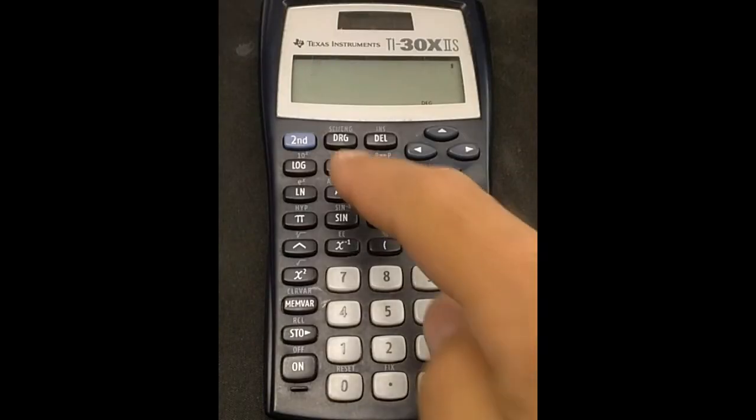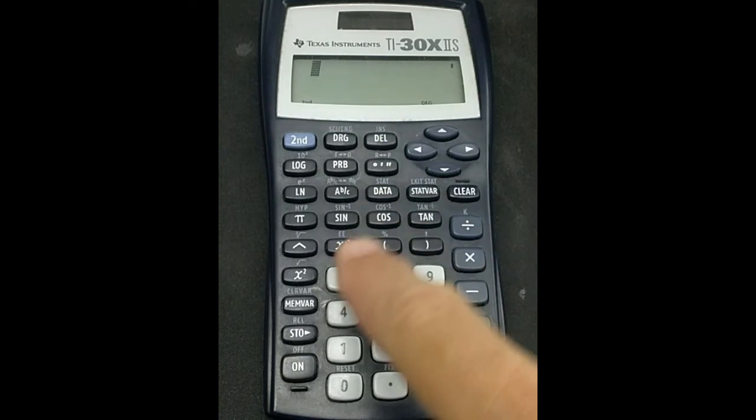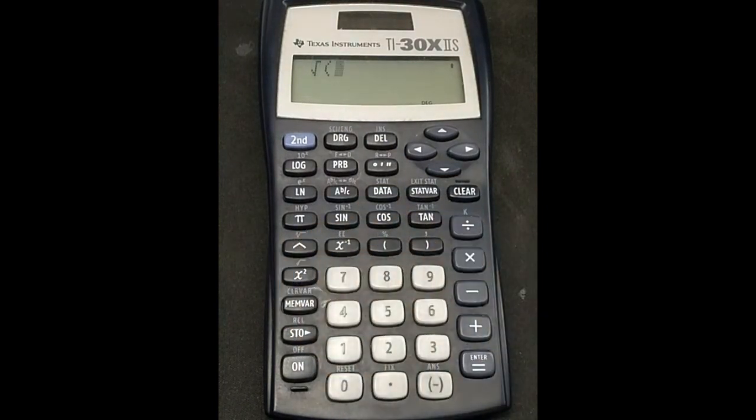On your calculator, the square root symbol may be written in blue or yellow, right above the x-squared button. These parts written above are the secondary uses of each button. To take the square root of a number on your calculator, you will first hit the second button, then the x-squared button. This brings up the square root symbol on your screen, plus an open parenthesis. You will get the square root of whatever is inside the parentheses after the square root symbol.